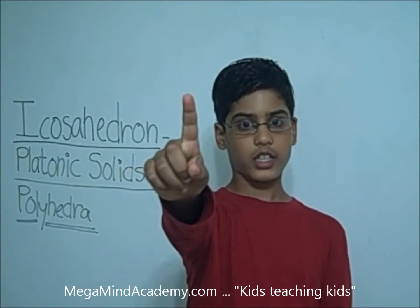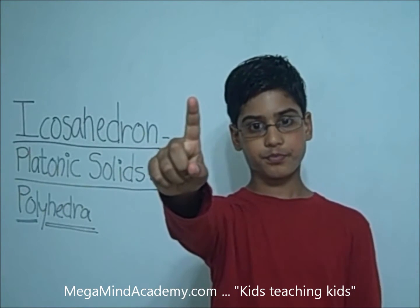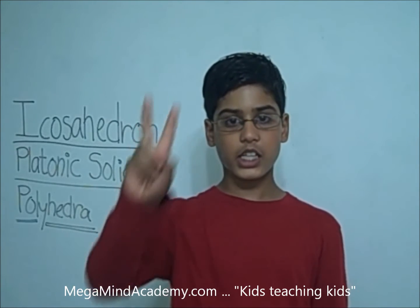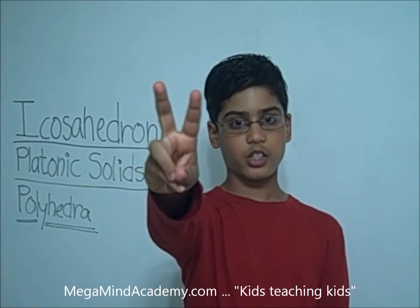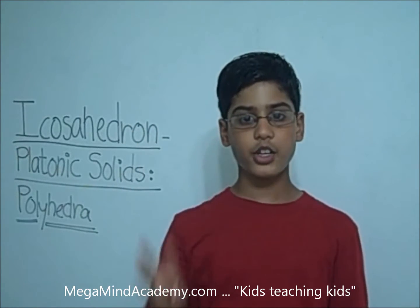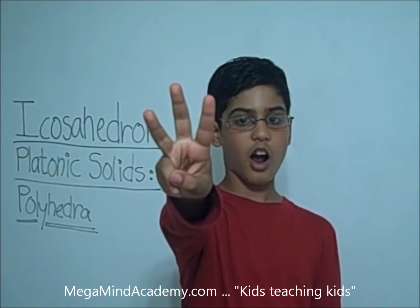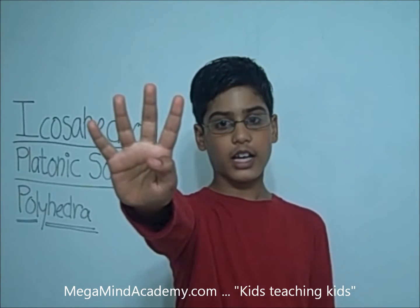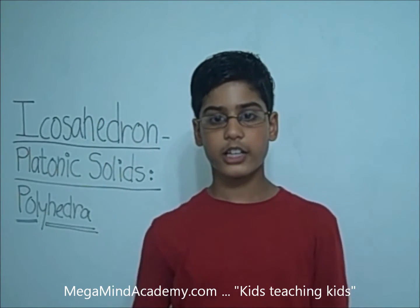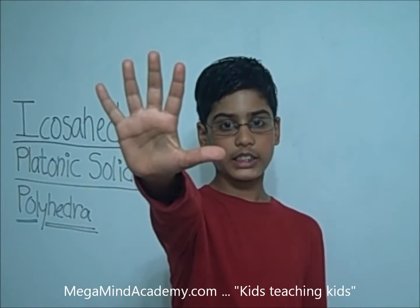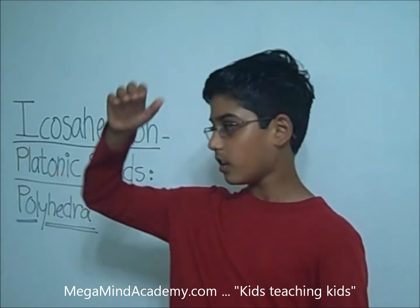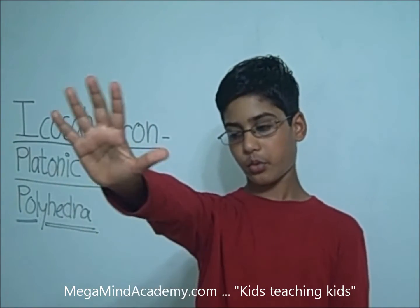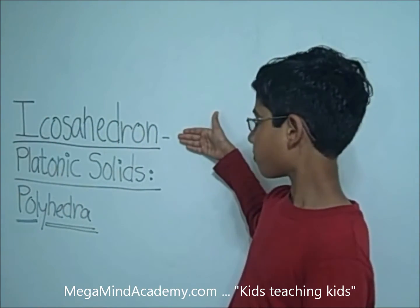There are five types of platonic solids. The first one is tetrahedron. The second one is cube. The third one is octahedron. The fourth one is dodecahedron. And the fifth one is icosahedron. Today we are going to learn about the fifth one, icosahedron.